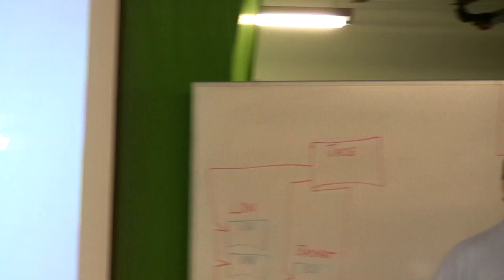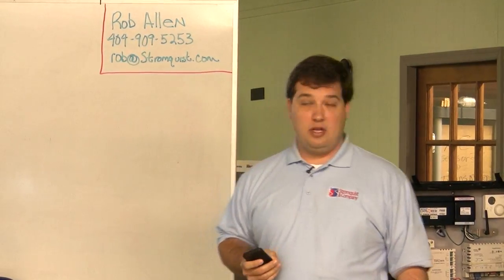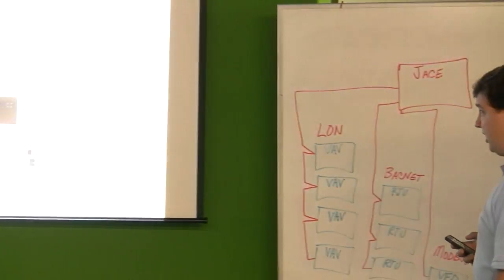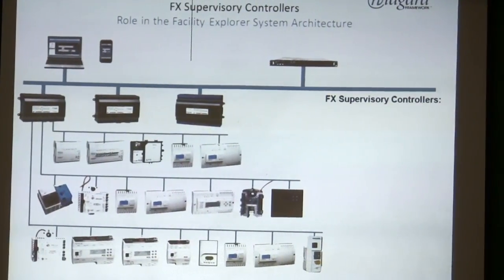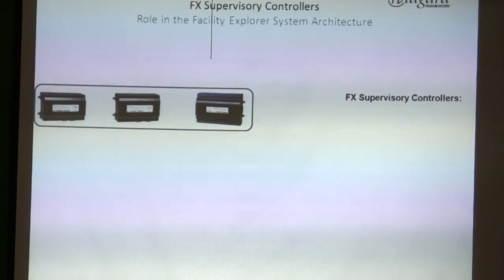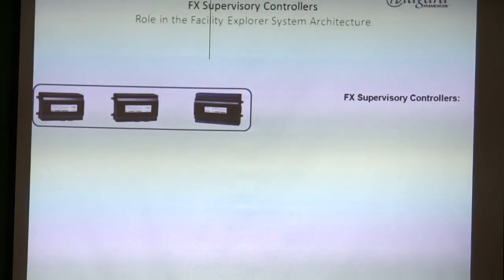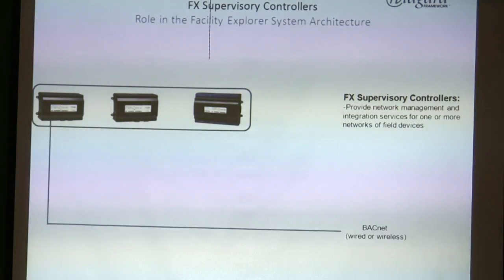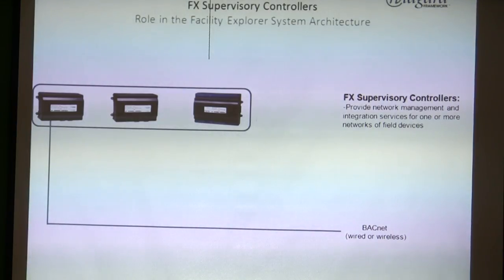This is a Johnson Controls PowerPoint that I borrowed from them because it does an excellent job. This is another system architecture with several Jaces installed, pulling in several different buildings of controllers or floors. They provide network management, integrate service, and communicate to all the other controllers. There's a BACnet trunk running from one Jace out to several controllers.